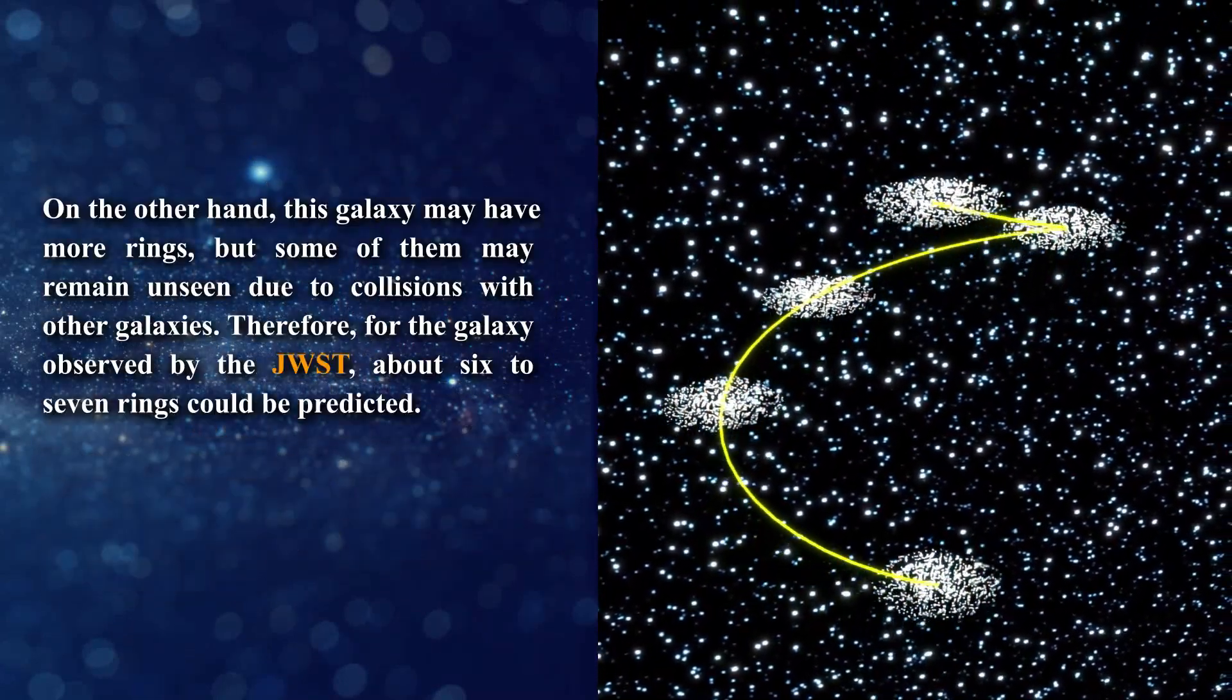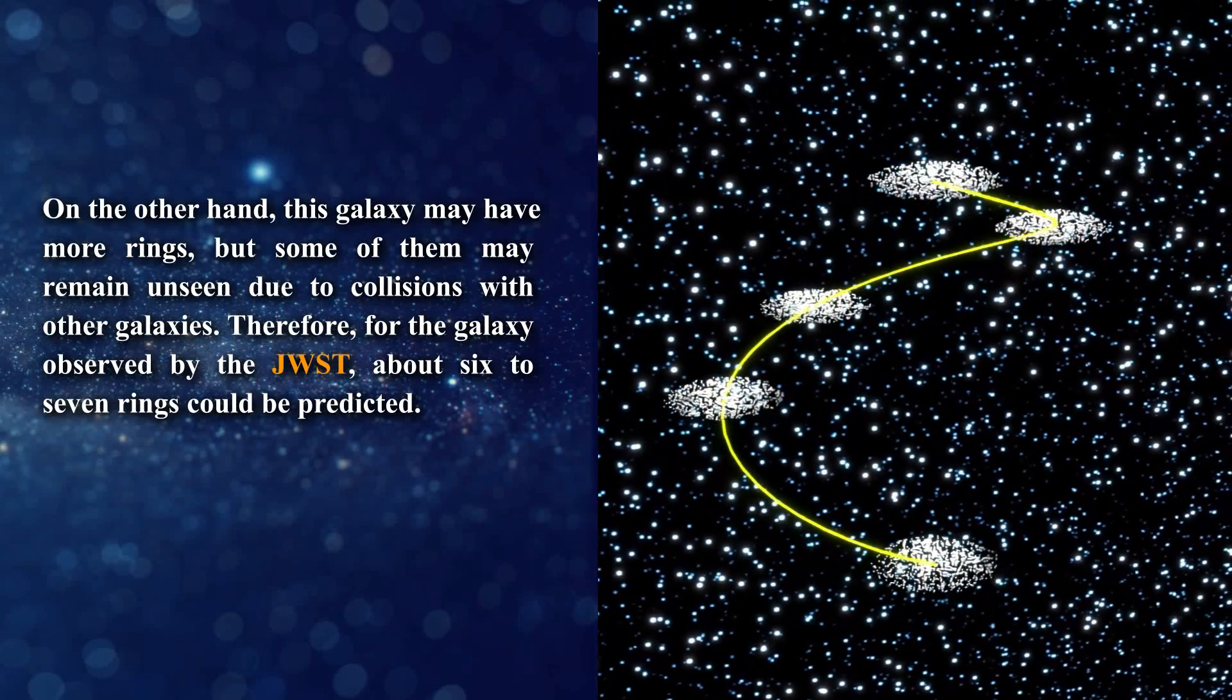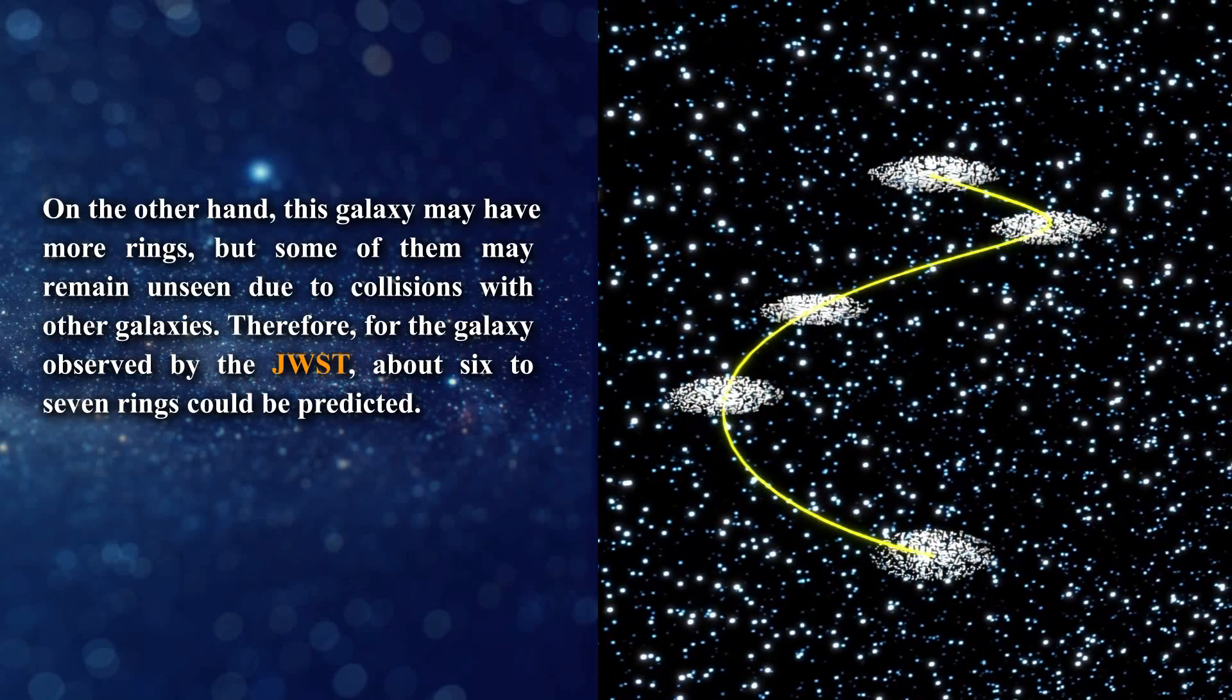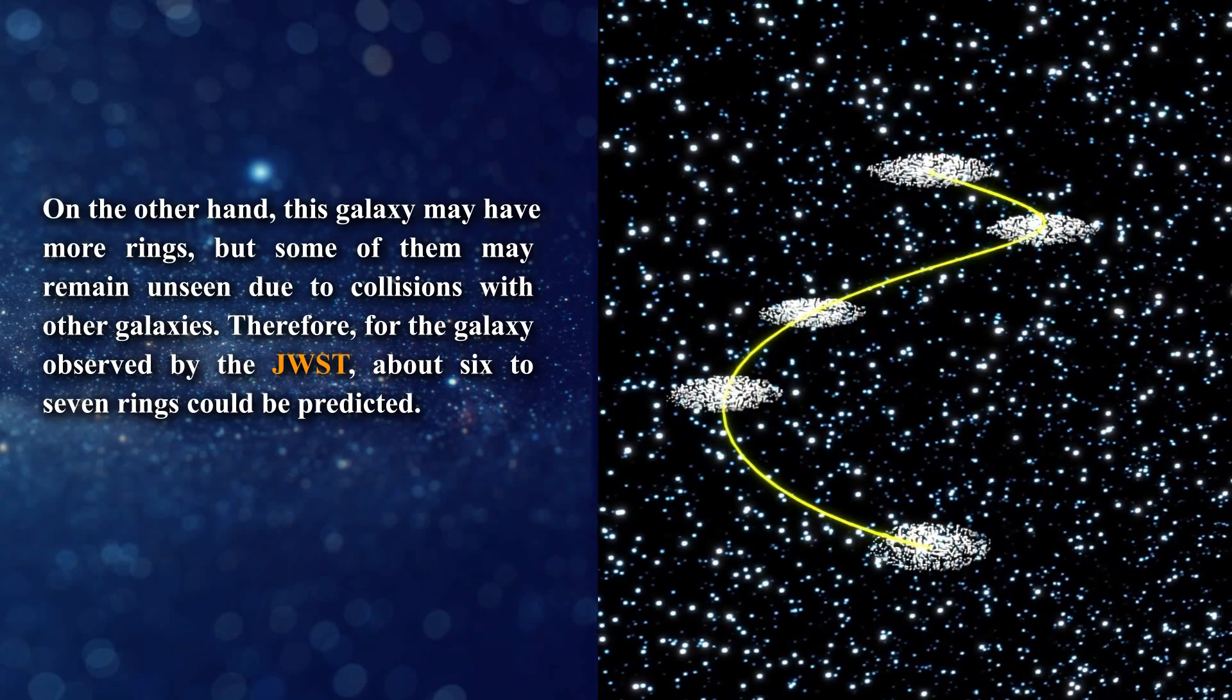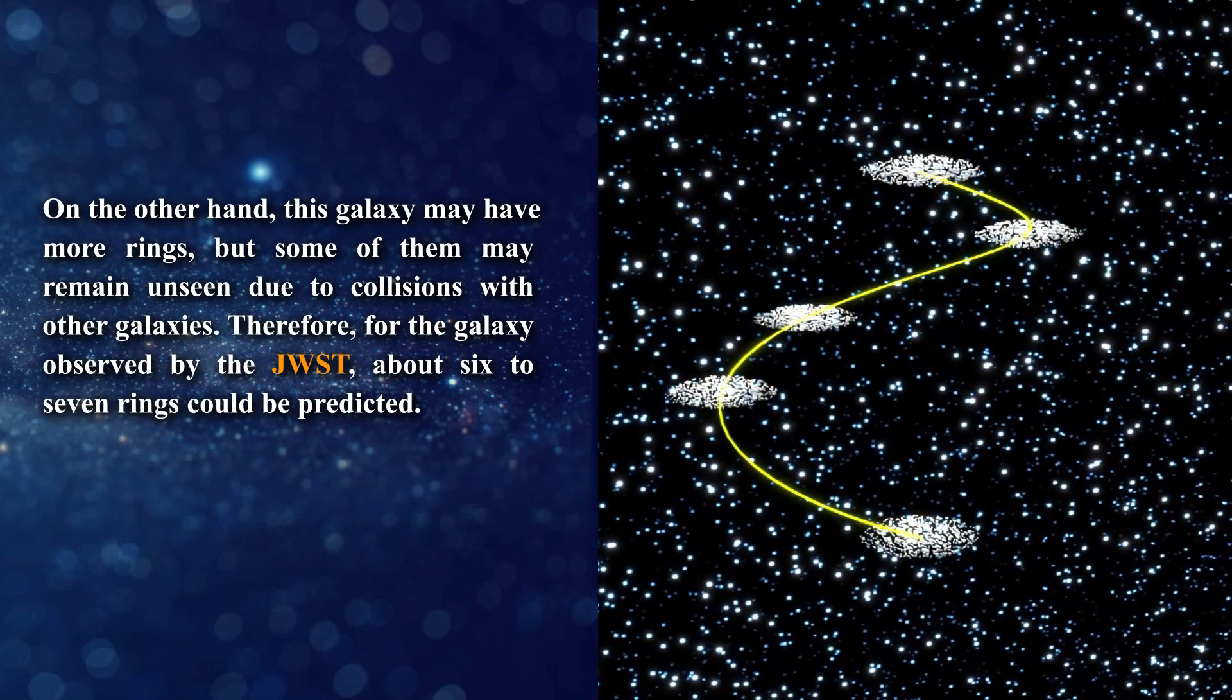On the other hand, this galaxy may have more rings, but some of them may remain unseen due to collisions with other galaxies. Therefore, for the galaxy observed by the James Webb Space Telescope, about six to seven rings could be predicted.